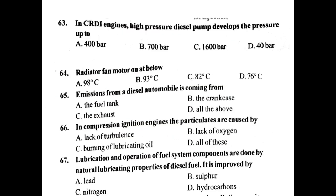In the CRDI system, the high pressure diesel pump develops pressure up to 1,600 bar. The radiator fan motor switches on below 90 degrees Celsius. Emissions from a diesel automobile come from the fuel tank, crankcase, and exhaust — all of these.